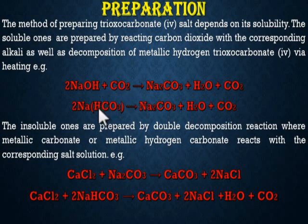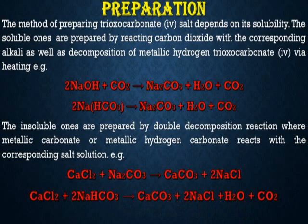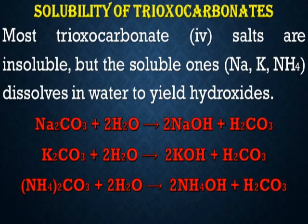The insoluble carbonates are prepared by double decomposition reaction, where metallic carbonates or metallic hydrogen carbonates react with the corresponding salt solution. For example, calcium chloride reacted with sodium trioxyl carbonate 4 gives calcium carbonate and sodium chloride. Similarly, calcium chloride combined with sodium hydrogen trioxyl carbonate 4 gives calcium trioxyl carbonate 4, two molecules of sodium chloride, water, and carbon dioxide.